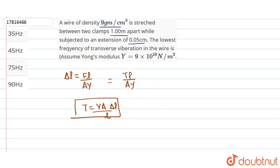Lowest frequency is given. V by 2L. V is given under root T by Rho A upon 2L.